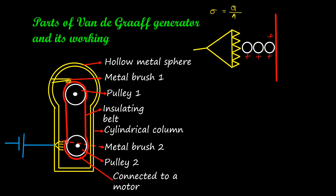Due to high potential, electrons from the material of the belt get ejected and positive charge is developed there. This positive charge moves upward as the belt rolls up. The charges developed move up along the belt. As the appliance is continuously charged, positive charges move onto the belt and as the belt rolls up, the charges move upward and reach metal brush one, where ionization of air particles also takes place and charges are transferred to the bristle tips.